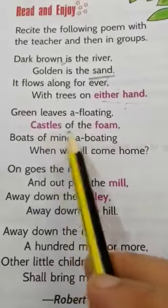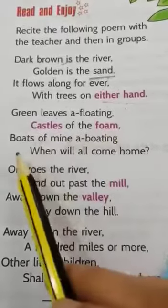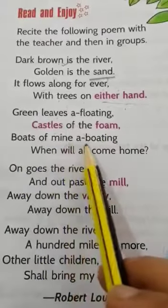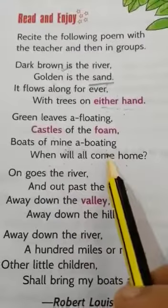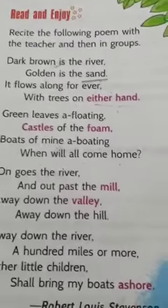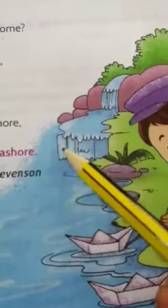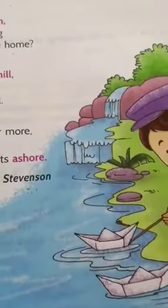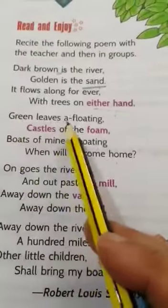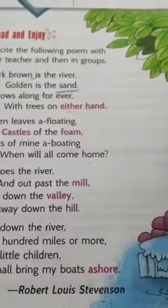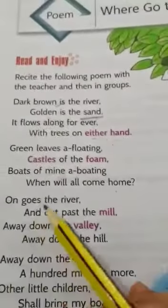Boats of mine are boating — when will all come home? Here the river is flowing and the dry leaves from the trees are falling down and flowing on the water. Green leaves are also flowing down the water.